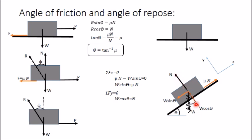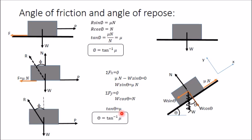From W sin θ = μN and W cos θ = N, dividing the first equation by the second gives tan θ = μ, so θ = tan⁻¹(μ). This is the same result as the angle of friction, so these two angles are numerically always equal. The angle of repose depends only on the value of μ.